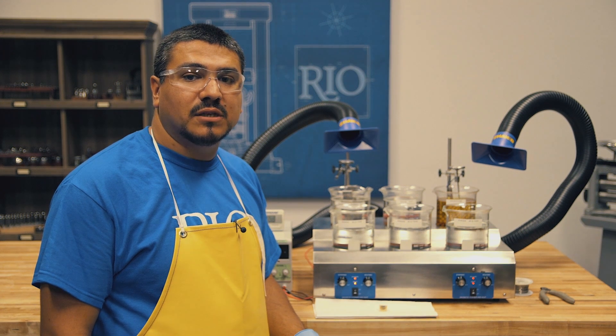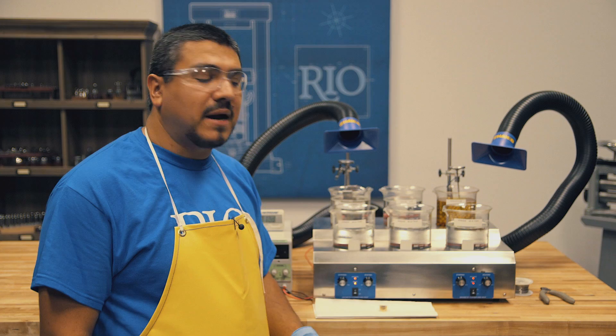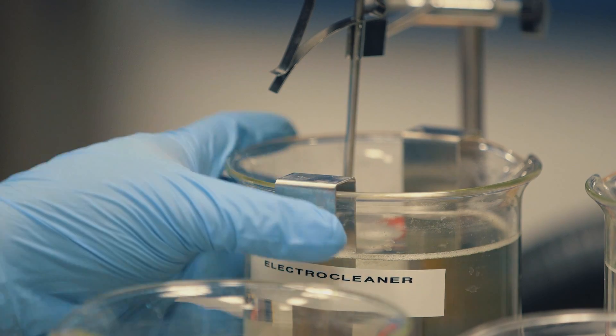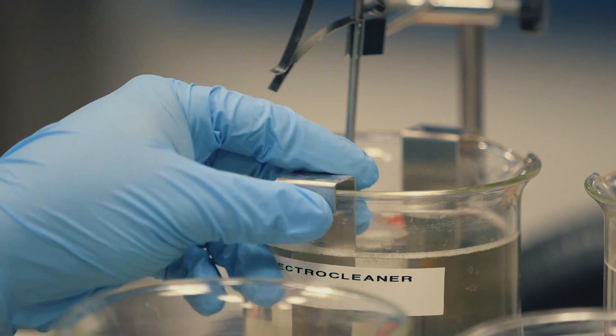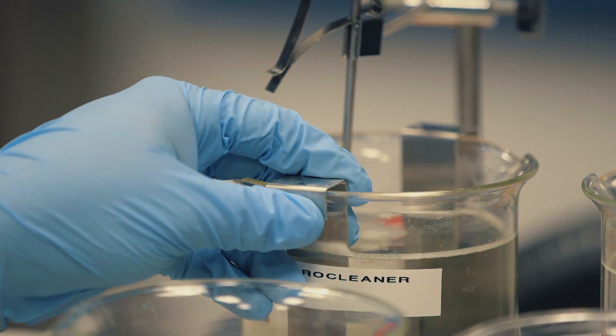Now that we have our cleaning solutions mixed, we're going to place them into our Midas six station plating unit. Station one is our electro cleaner. It is stirred and heated. We have our stainless steel anode, which will pass a positive current through our solution.